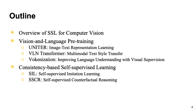Here is the outline. I will first give a brief overview of self-supervised learning for vision. Then I'll talk about vision and language pre-training, especially three recent models: UNITER for image-text representation learning, VLN Transformer which proposes multimodal text-style transfer for vision-and-language navigation, and Vulcanization which improves natural language understanding with visual supervision. I'll also introduce novel self-supervised learning based on cycle consistency, including self-supervised imitation learning and self-supervised counterfactual reasoning.